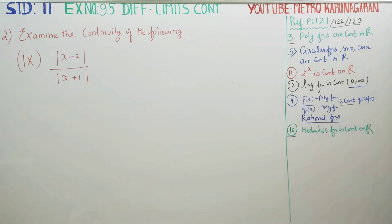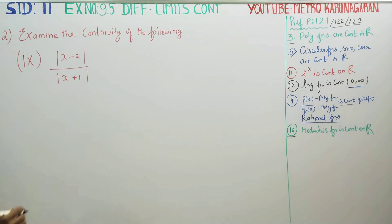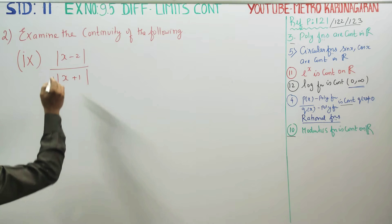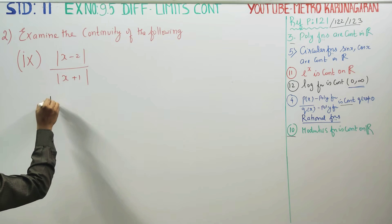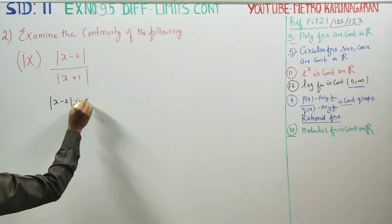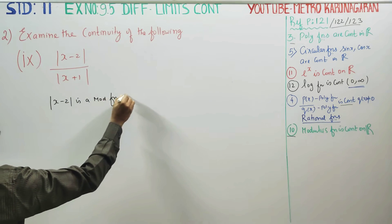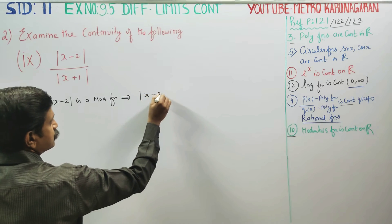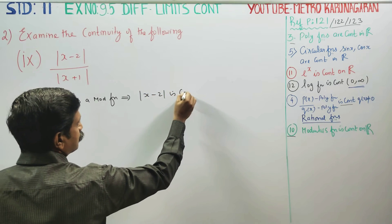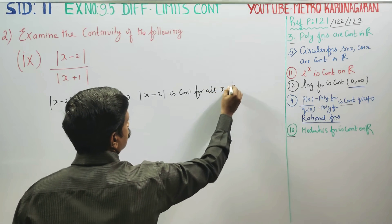Dear 11th Standard Students, in Exercise 9.5 sum number 2, examine the continuity of the following: |x - 2| / |x + 1|. This is a modulus function. You can comfortably write: |x - 2| is a modulus function, which implies x - 2 is continuous for all x belonging to R.